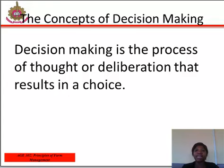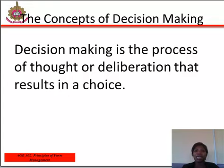A problem is identified when the farm manager discovers some deviation from past experience. Once the farm manager notices any strange happenings or unusual occurrence, then a problem is already identified. The next step is to define the problem. Definition of the problem involves locating the root cause of the problem identified, which requires establishing what is responsible for that problem.